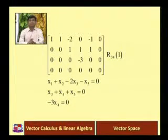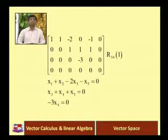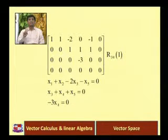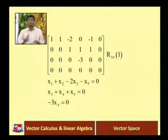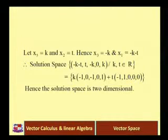So x1: the equation is x1 plus x2 minus 2x3 minus x5 is equal to 0; x3 plus x4 plus x5 is equal to 0; and x4 minus 3x4 is equal to 0, that means x4 is equal to 0. So we have to take x5 and x2 as free variables: suppose x3 and x5 equal to k, and x2 equal to t, because there is not a leading entry in the second column.